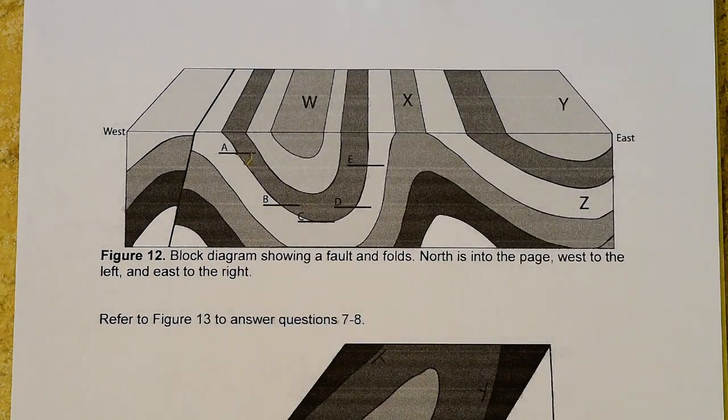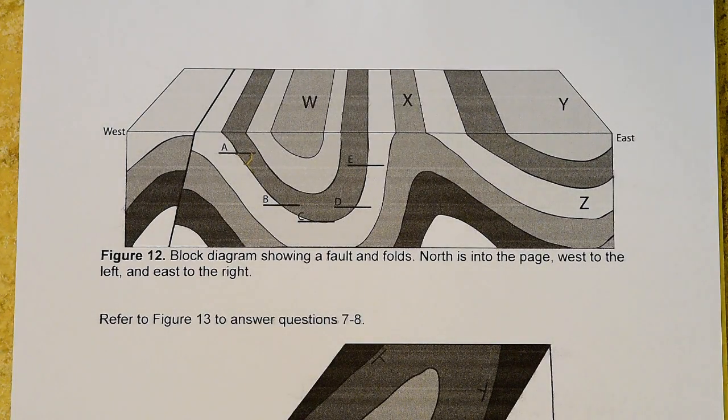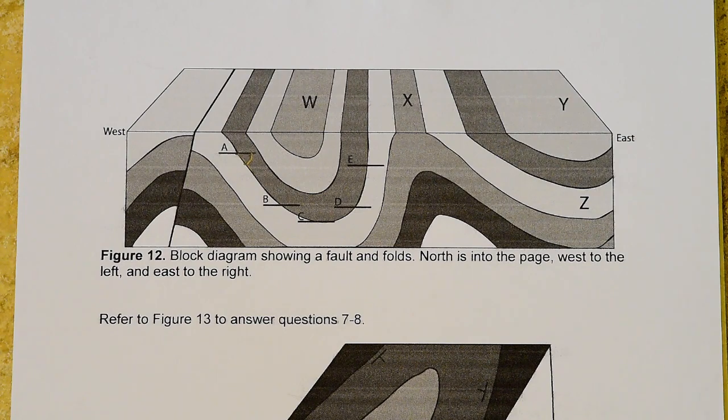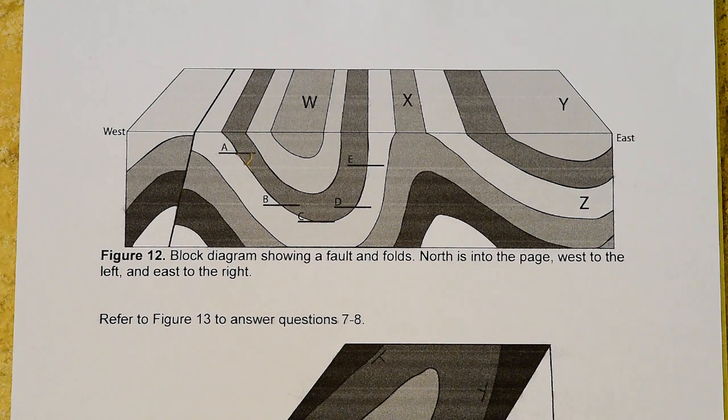Now there is another rule when measuring these dip angles. There's always a direction except if your rock layers are perfectly horizontal, which would be a zero degree dip.